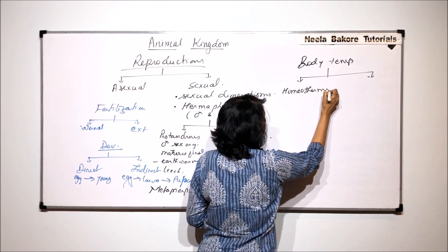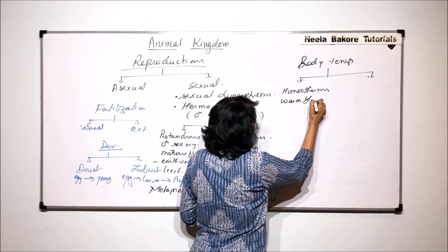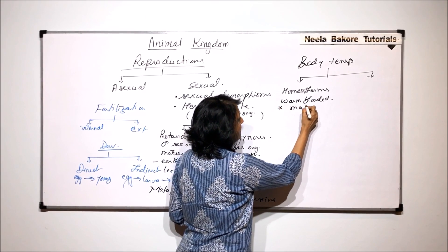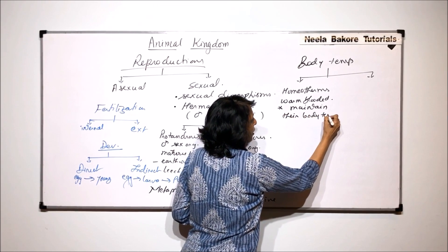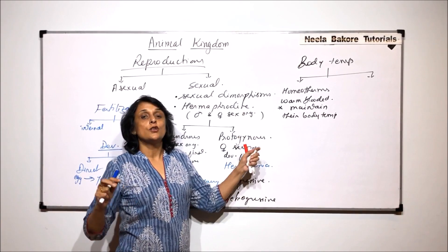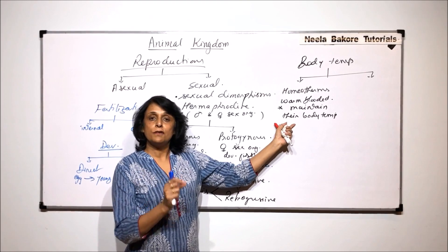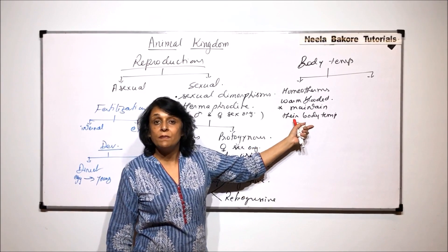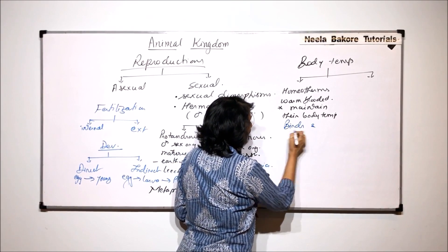Homeotherms means we call them warm blooded animals. These are warm blooded animals. And what exactly we mean by warm blooded animals is they maintain their body temperature. So body temperature is maintained irrespective of what is the outside temperature. So if outside temperature is lower, that means it gets cold outside, the body temperature is still going to remain the same. This is in our case. So homeotherms are birds and mammals.